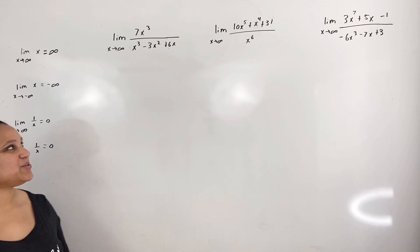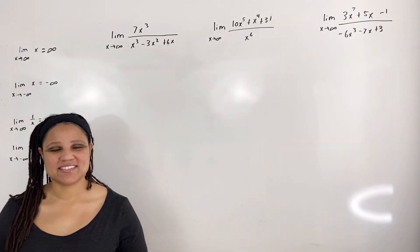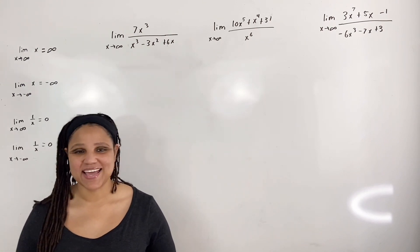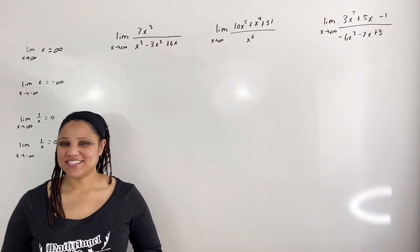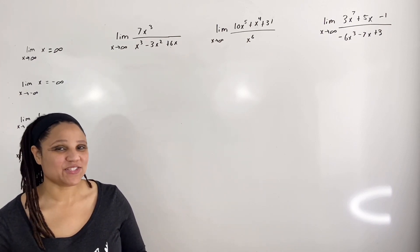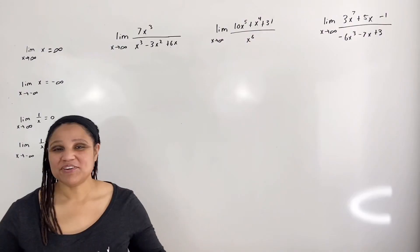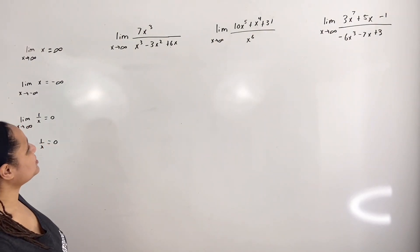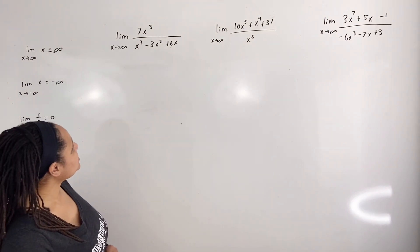Now that we have covered the basics, let us move into our examples. We are going to take each one of these expressions to positive infinity and negative infinity. Be sure to watch the video until the very end because I will show you a shortcut for finding limits at infinity.